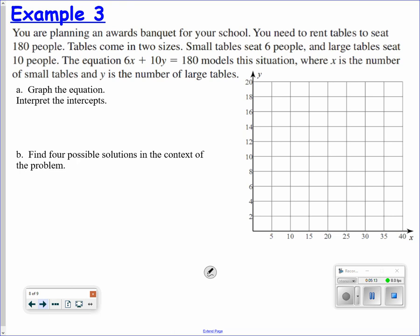Real-world applications. You are planning an awards banquet for your school. You need to rent tables for 180 people. The tables come in two sizes. Small tables seat 6 people. Large tables seat 10. The equation 6x plus 10y equals 180 models the situation, where x is the number of small tables and y is the number of large tables. Graph the equation using the intercepts. If I put 0 in for y and I solve, 6x plus 10 times 0 equals 180. 6x equals 180. x would equal 30.